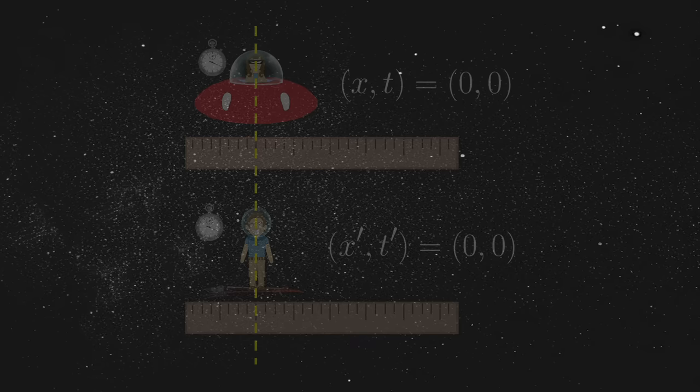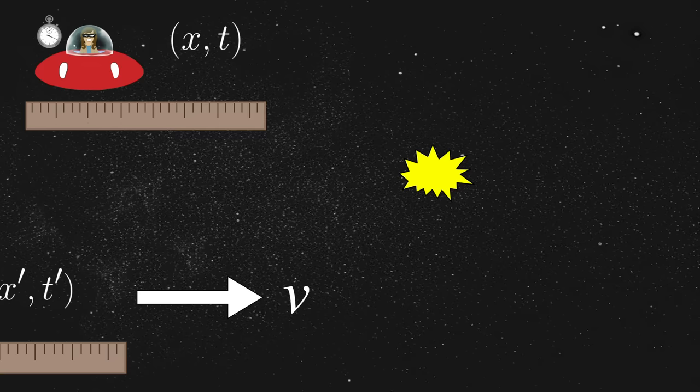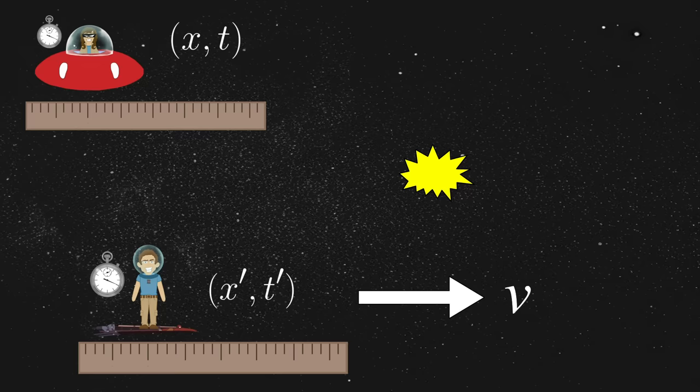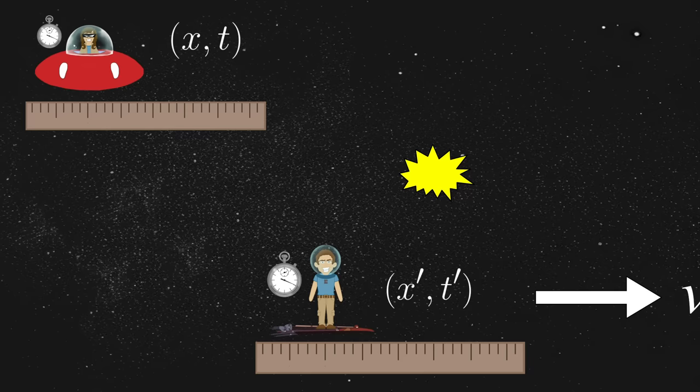Now suppose that Annie and Jim both observe an event during their encounter. Say, a piece of nearby space rock happens to collide with another. Naturally, Annie performs her measurement, which she records as the numbers x, t. Likewise, Jim does the same thing from his perspective, resulting in x' comma t'. So far, so good, right?